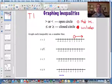b is greater than or equal to 1. That would be closed circle at 1. And all the numbers bigger point that way.